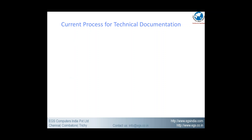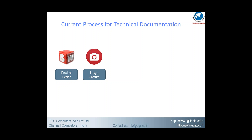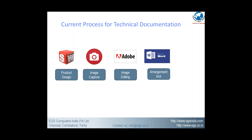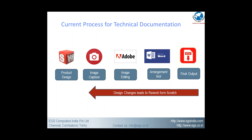Let us look at the current process followed in organizations for technical documentation. First they create a product design, capture an image, put it into image editing, then use an arrangement tool such as Microsoft Word to arrange all the text and images. The final output is in PDF. If there is any change in the product design, the entire process is repeated again — design changes lead to rework from scratch.